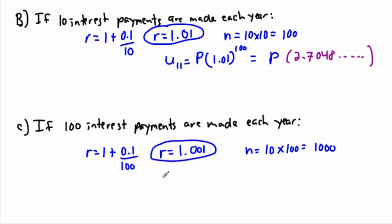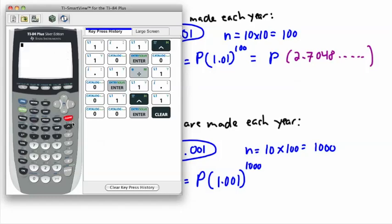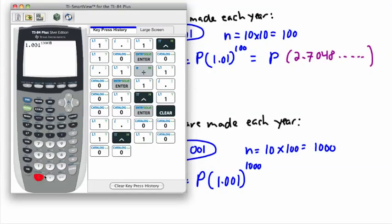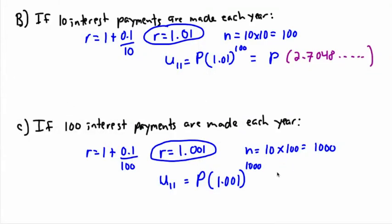Calculating 1.001 to the power of 1,000 gives 2.7169. So the amount after 10 years is P times 2.7169. Notice the pattern: with 1 payment we got 2.5937, with 10 we got 2.7048, and now with 100 we get 2.7169.